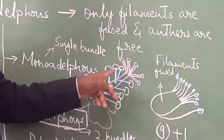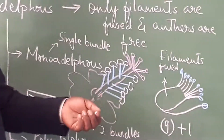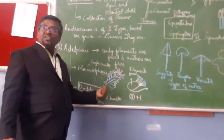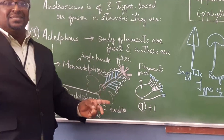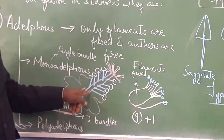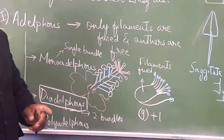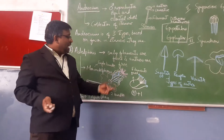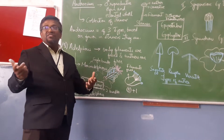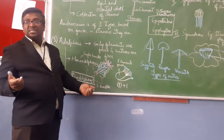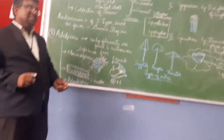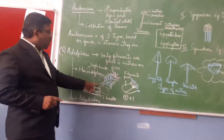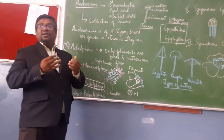The anthers are kidney-shaped or bean-shaped, so we call them reniform anthers. If you dissect the staminal tube, you find many slender stamens inside — so the stamens are infinite in number. The petals show twisted or contorted aestivation.